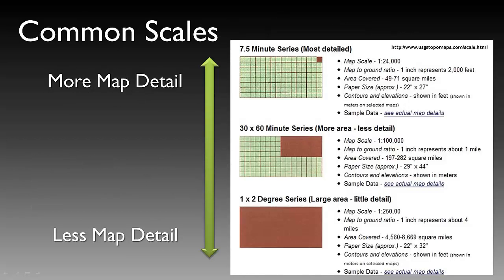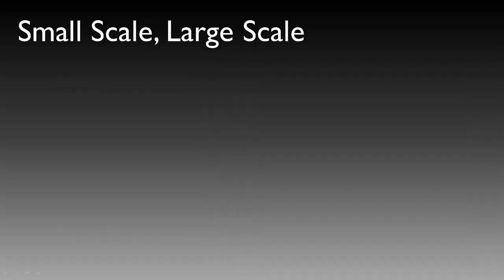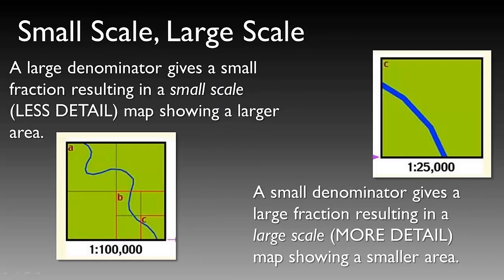Common map scales show that increasing map detail is near the top while decreasing detail but increasing area covered is towards the bottom. A 7.5-minute series, such as a USGS 1 to 24,000 map, has significantly more detail than a map at 1 to 250,000. A large denominator gives a small fraction resulting in a small scale, or a less detailed map showing a larger area. A small denominator gives a large fraction resulting in a large scale, a more detailed map showing a smaller area.